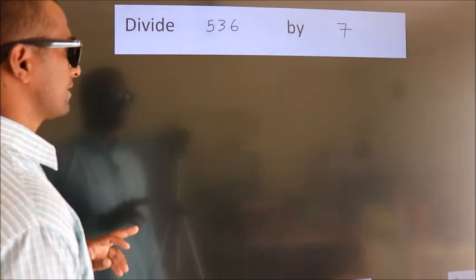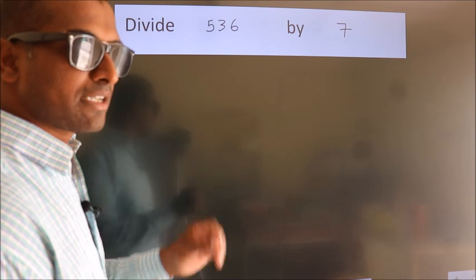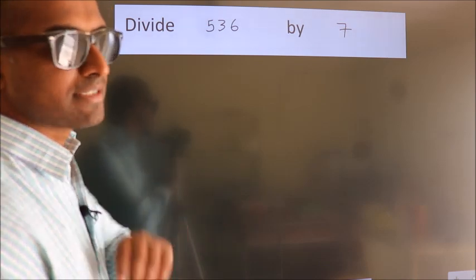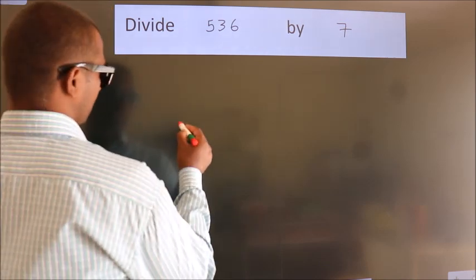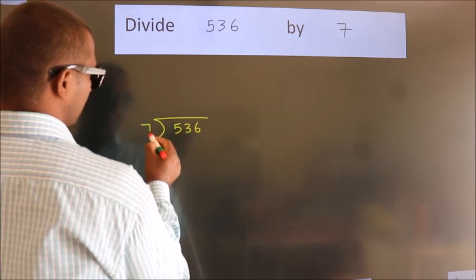Divide 536 by 7. To do this division, we should frame it in this way: 536 here, 7 here.